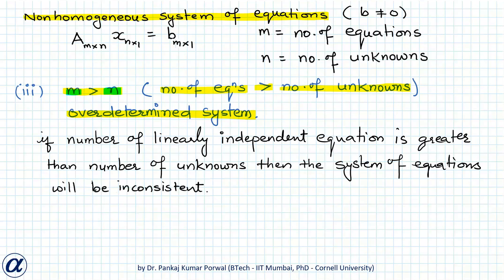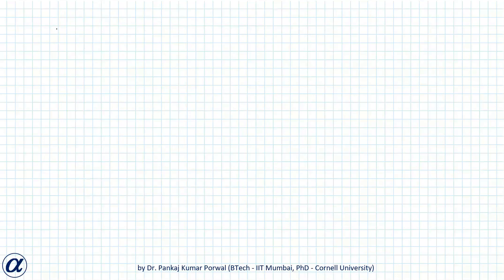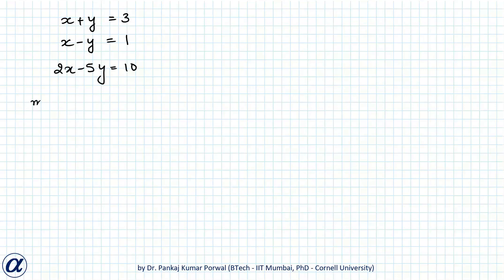Consider the system x plus y equals 3, x minus y equals 1, and 2x minus 5y equals 10. Here m equals 3 and n equals 2, so m is greater than n. Since the equations are in two variables, each represents a straight line in the 2D plane.